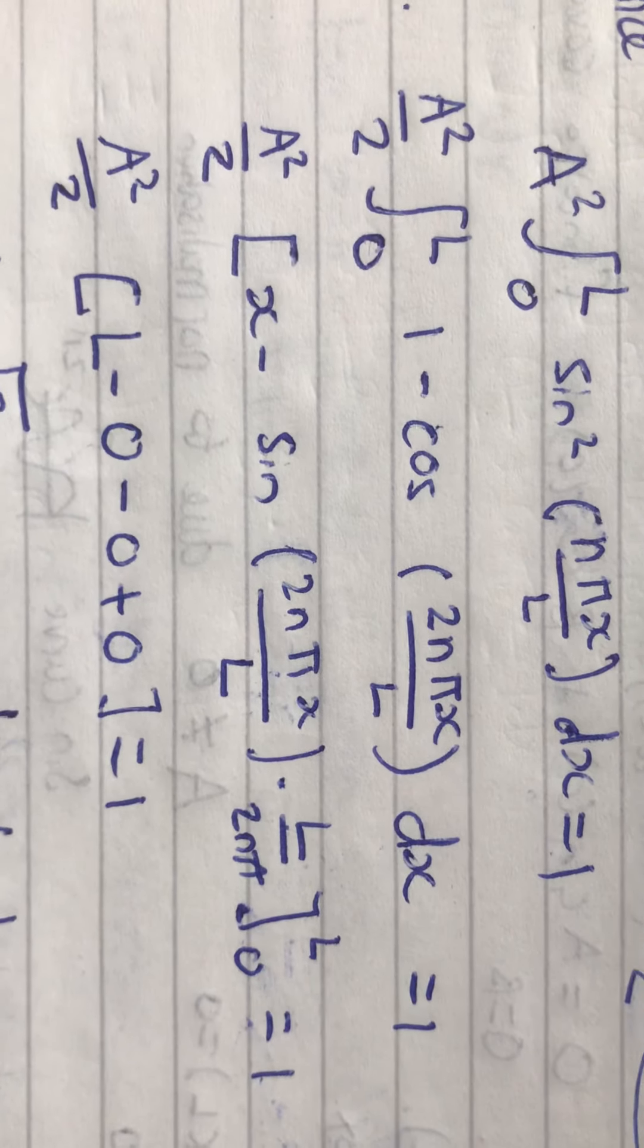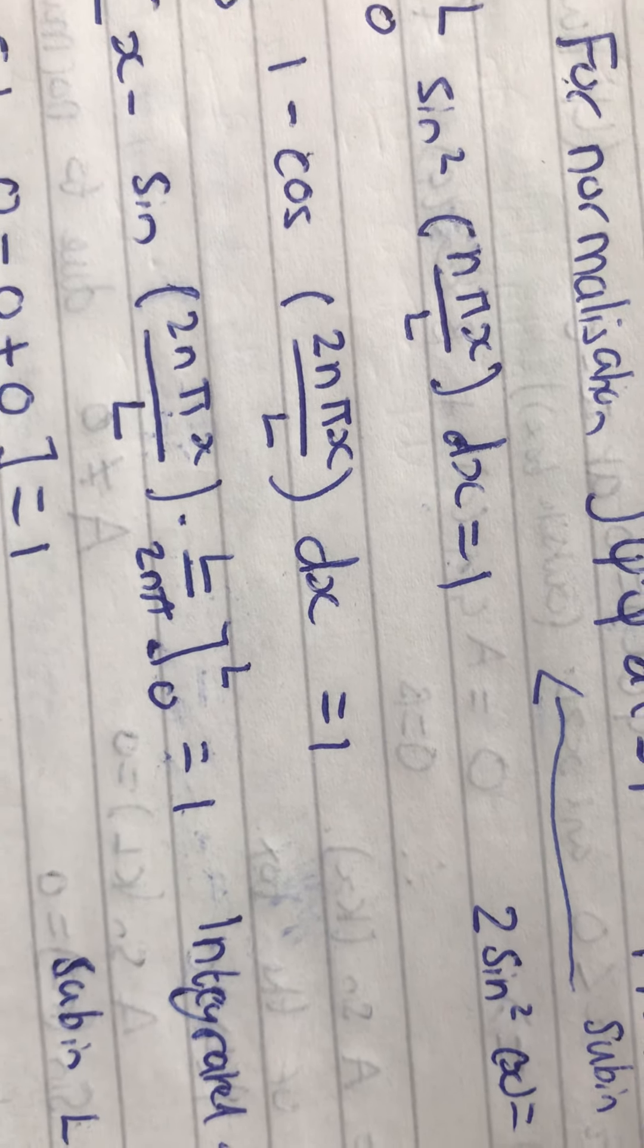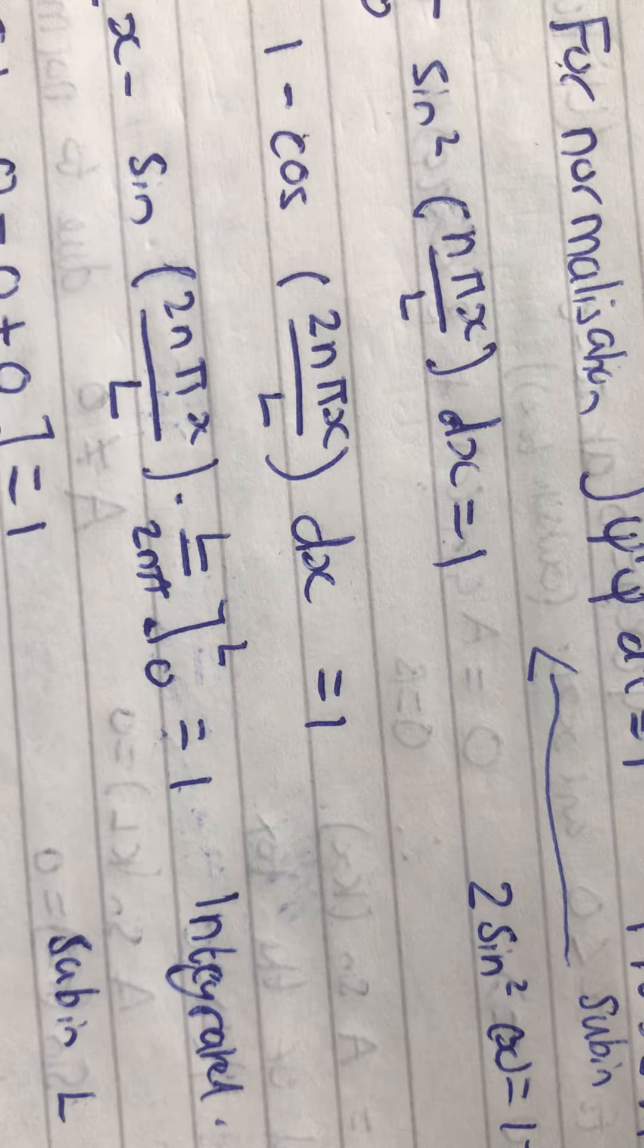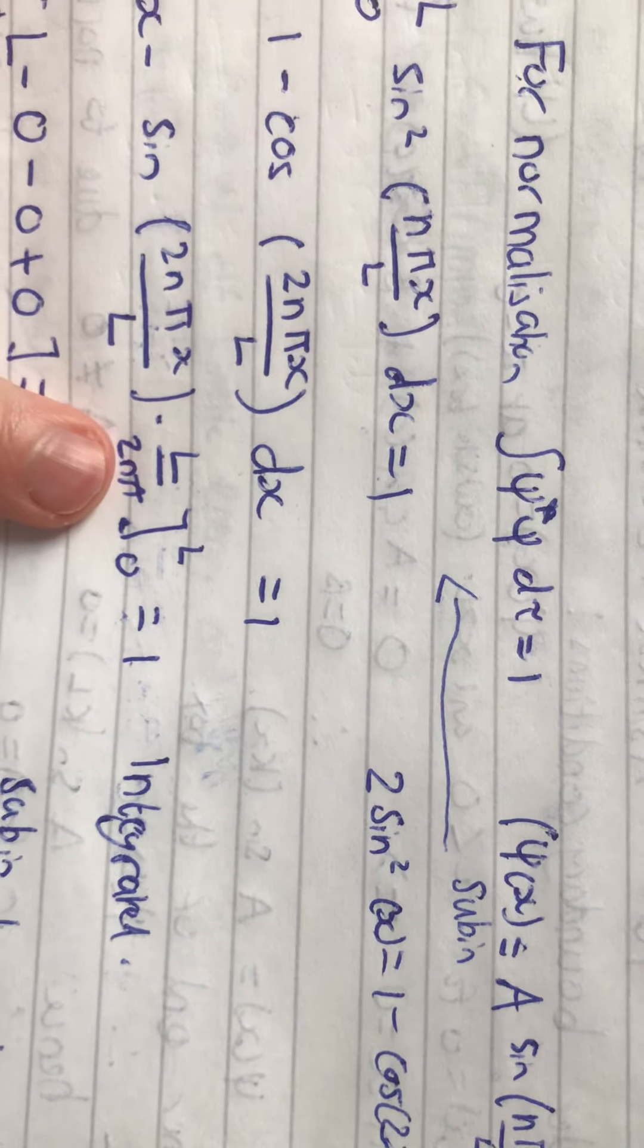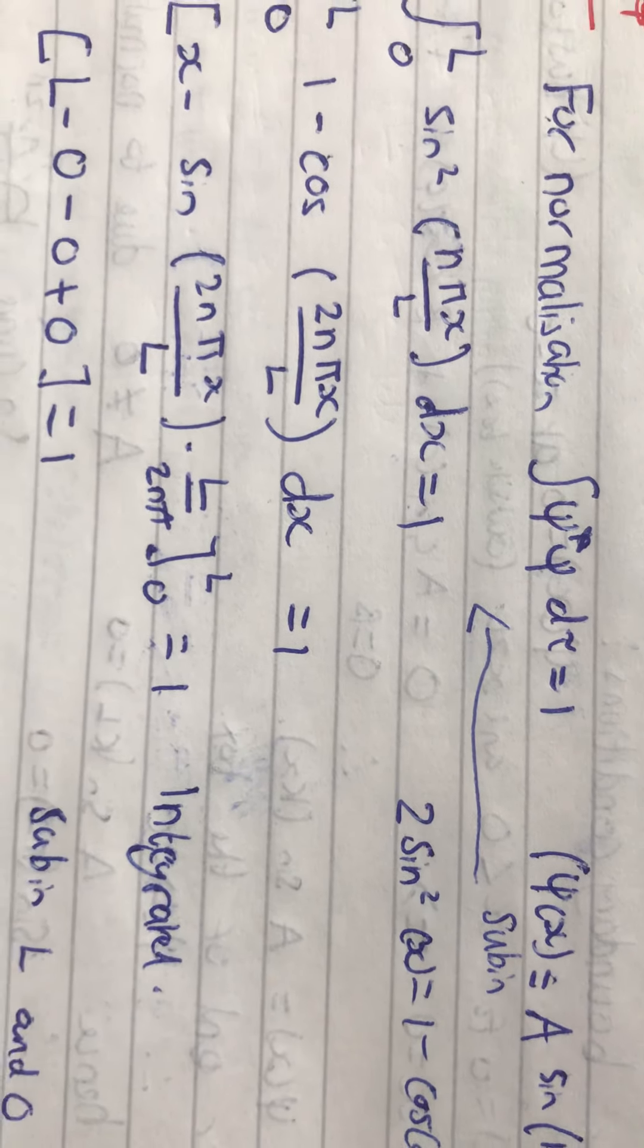This is the integrated form. If you integrate 1, you get x. If you integrate cos(2nπx/L), you'll get this factor out, which is dividing by that power, essentially.